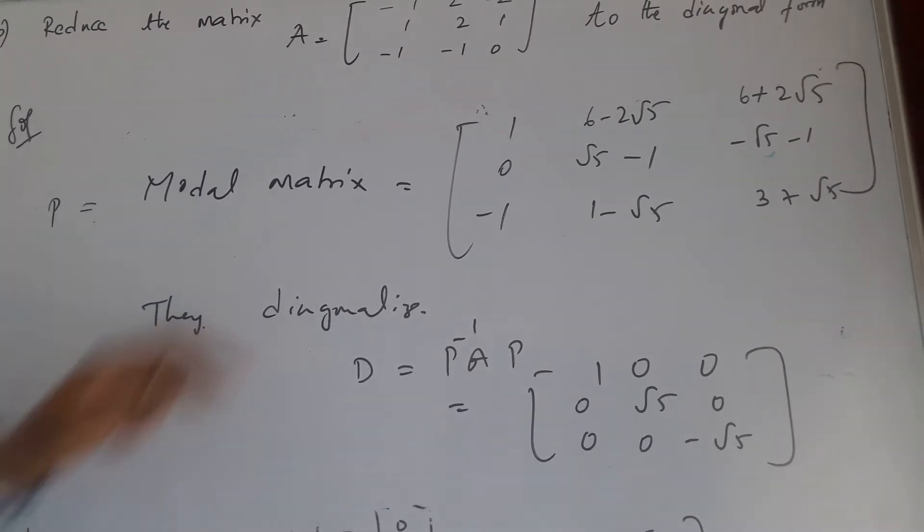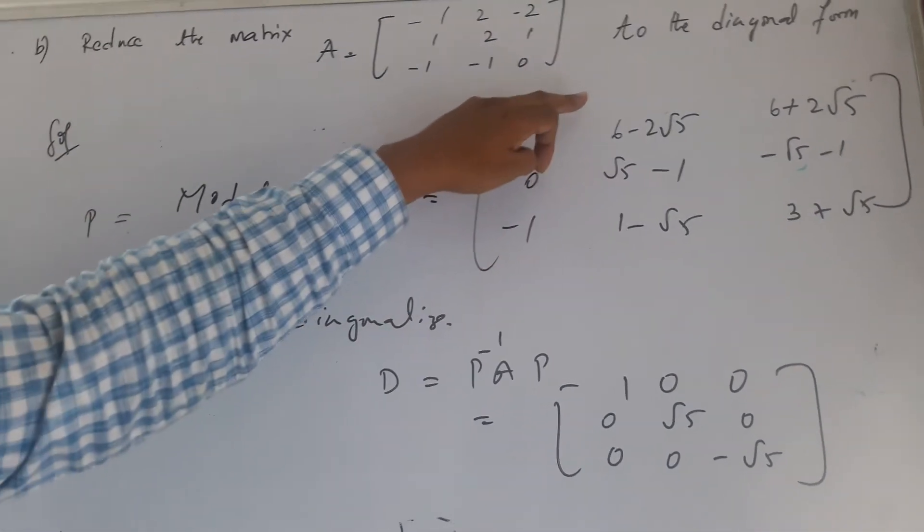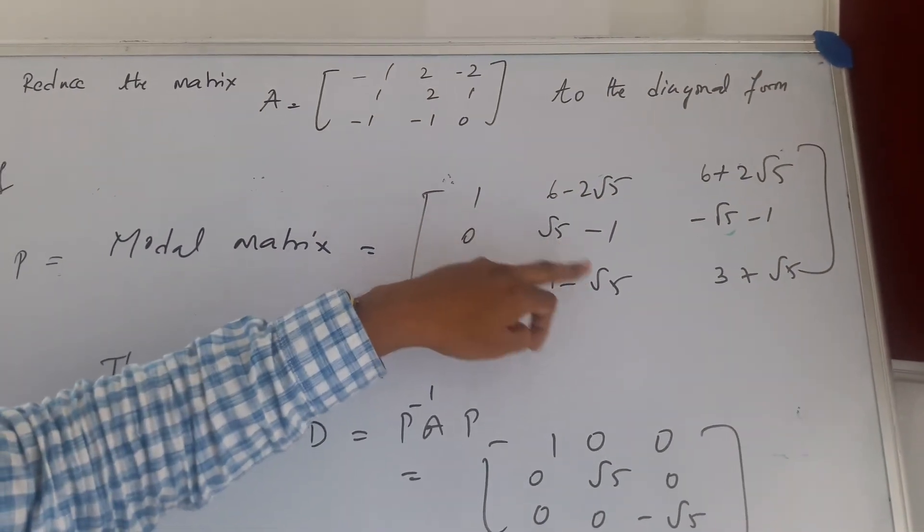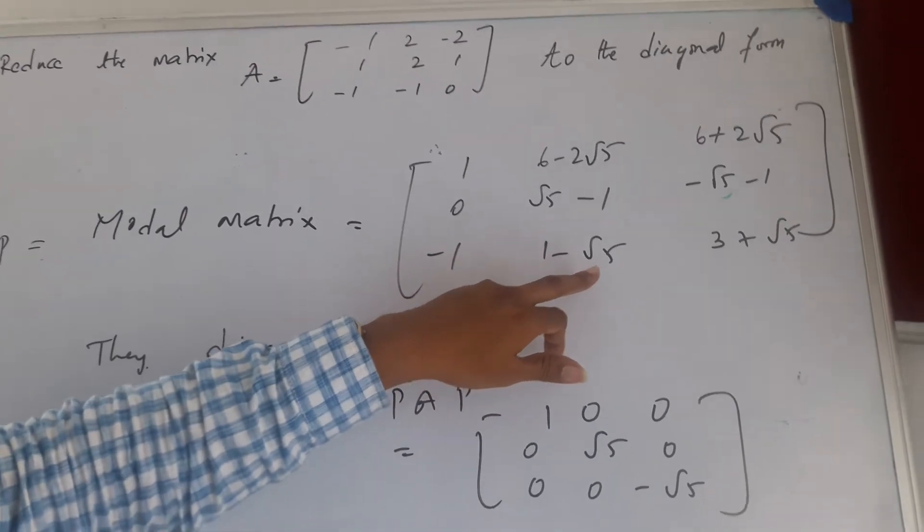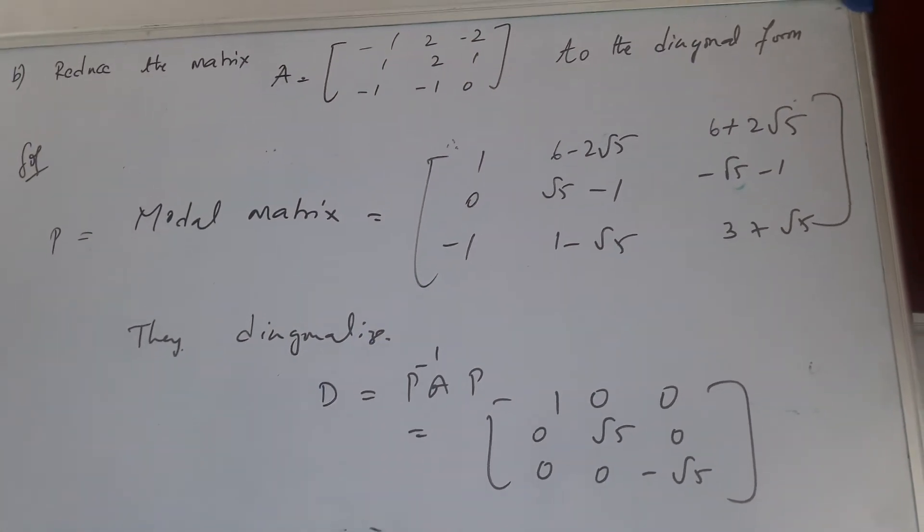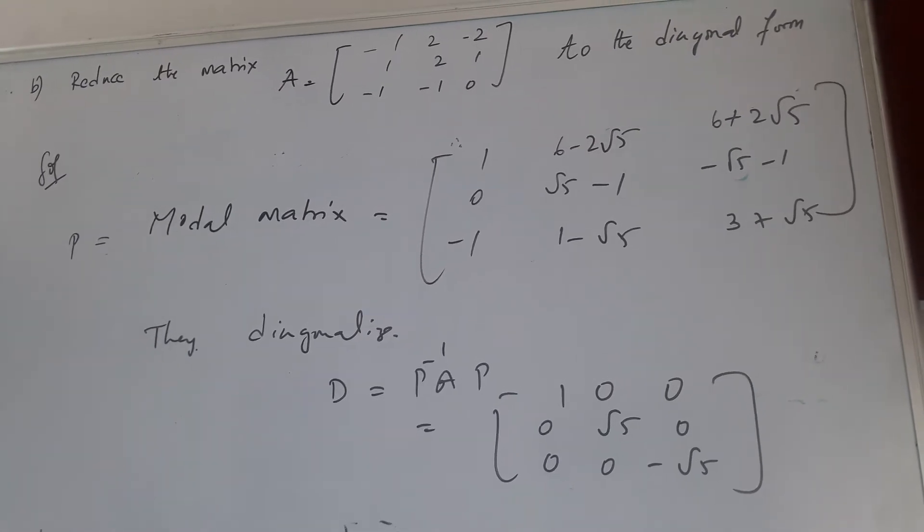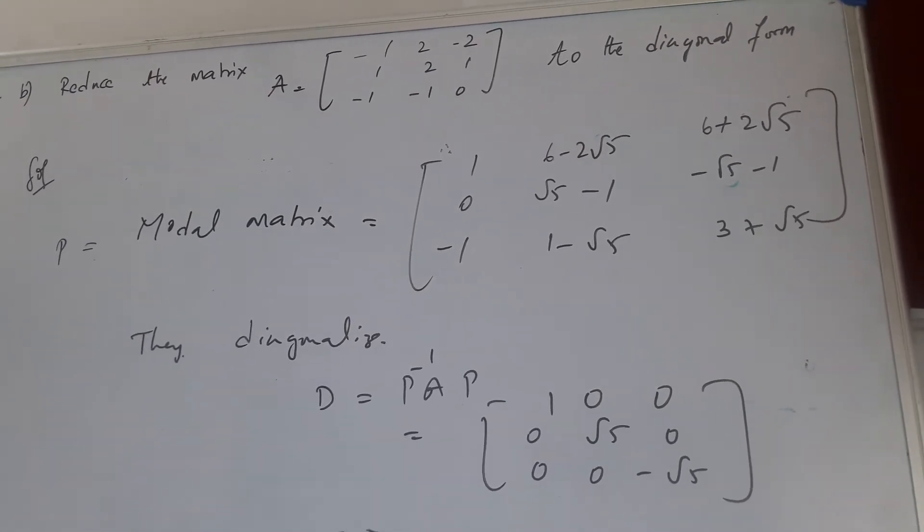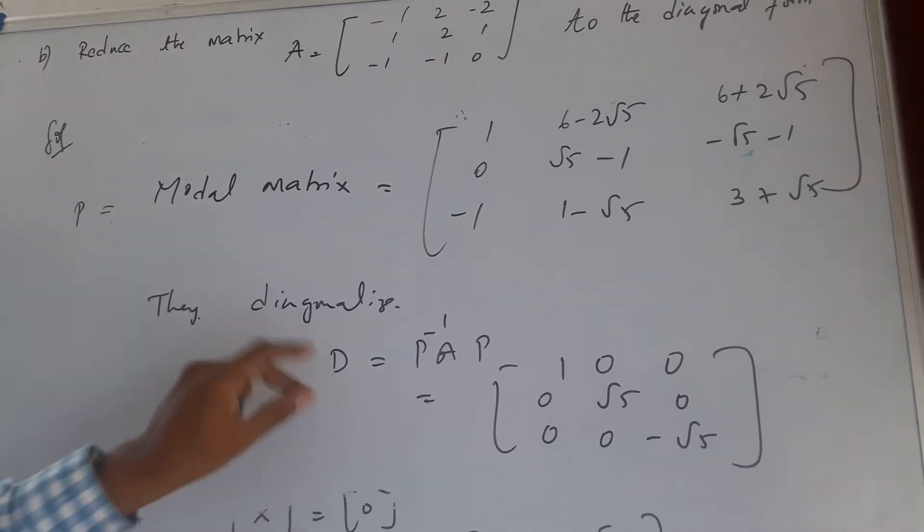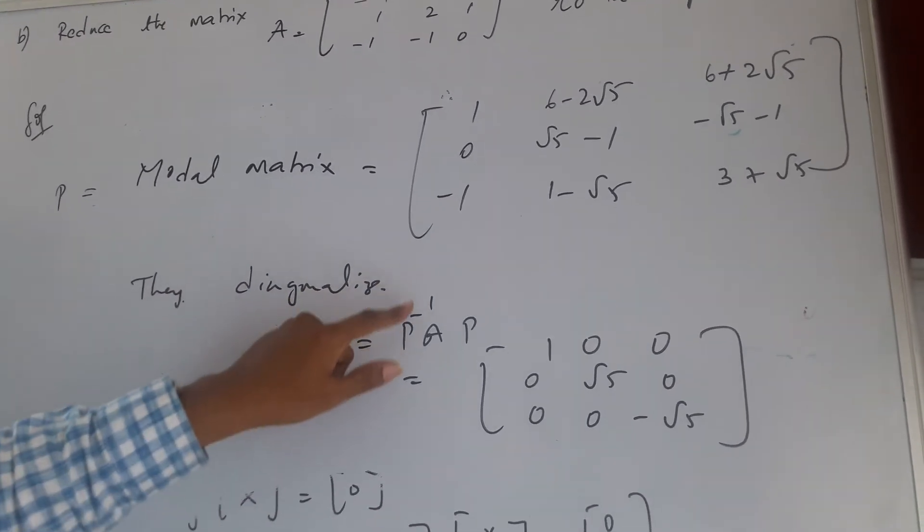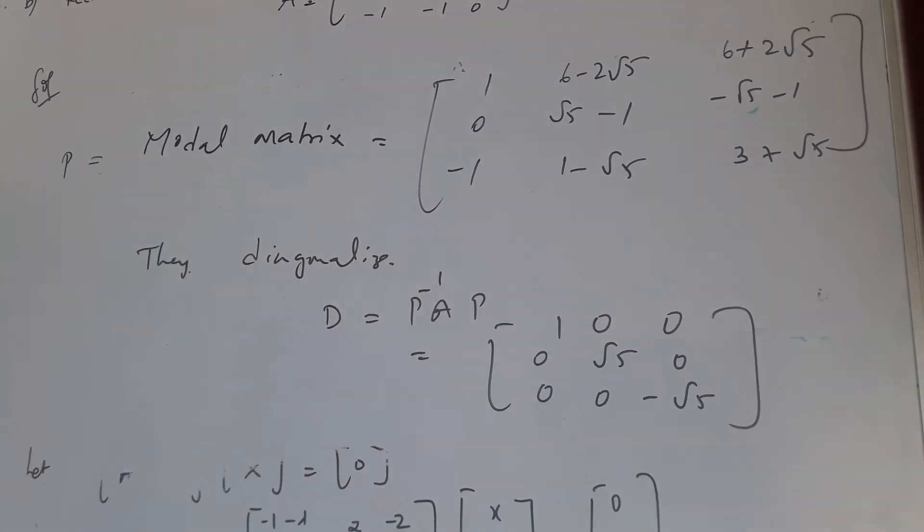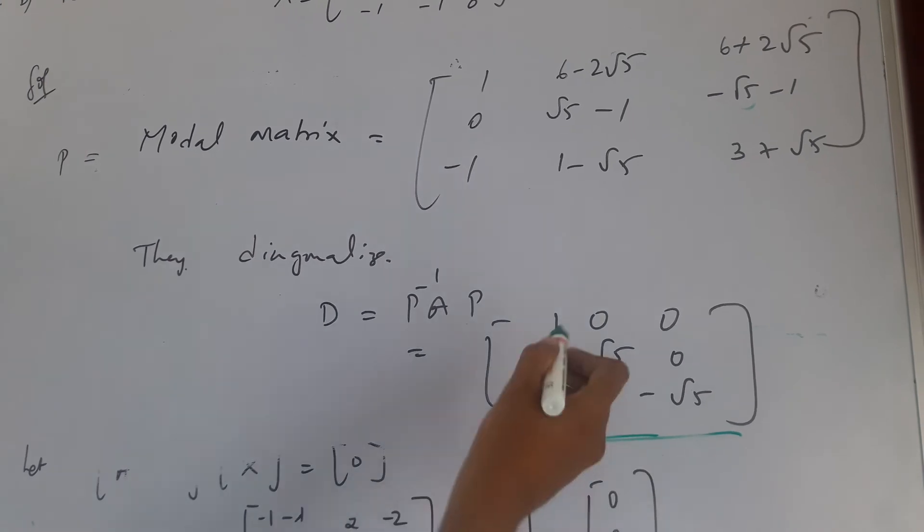Once I have got these results, the modal matrix will be 1, 0, minus 1; then 6 minus 2 root 5, root 5, 1 minus root 5; and last one 6 plus 2 root 5, minus 1, 3 plus root 5. They diagonalize.